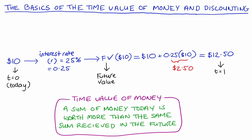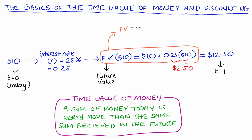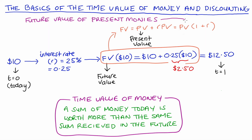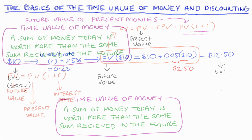Let's be a little more abstract to get some algebra going. Just like the future value of our ten dollars equals ten plus ten times the interest rate, our future value FV of some present value PV is equal to PV plus PV times the interest rate r. Taking PV out as a factor, we get the formula: the future value of some present monies is equal to the present value multiplied by one plus r.